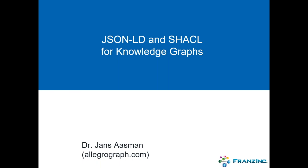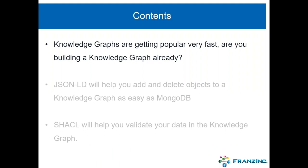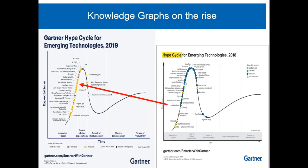In the title we have the word 'knowledge graphs.' We are a semantic graph database company. What we find is that the last two years we've primarily been helping mostly bigger companies, but also some startups, to build their own knowledge graphs — more services than we did in the past. These knowledge graphs are really on the rise if you look at the Gartner Hype Cycle.